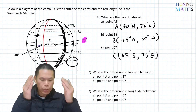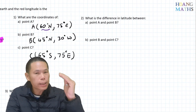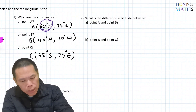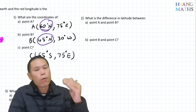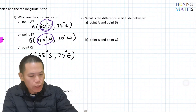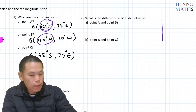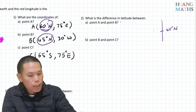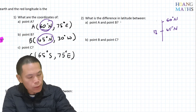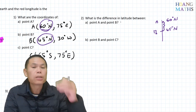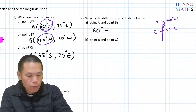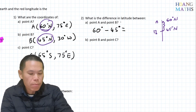Question two: latitude tells you the angular distance from the equator. Point A is 60 degrees north and B is 45 degrees north — both are above the equator, so we subtract. You can draw a quick diagram: B at 45 degrees north, A at 60 degrees north. The difference is 60 minus 45, which is 15 degrees.